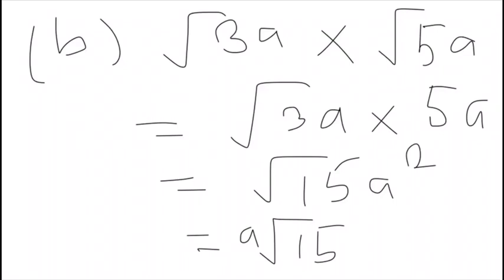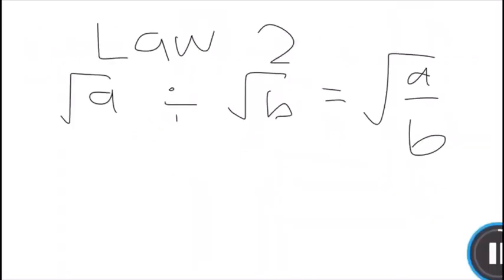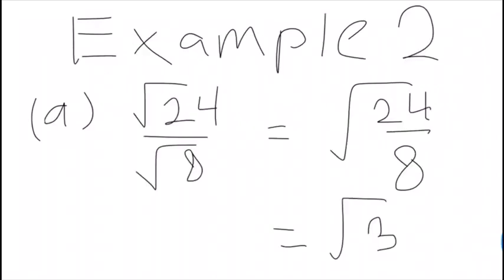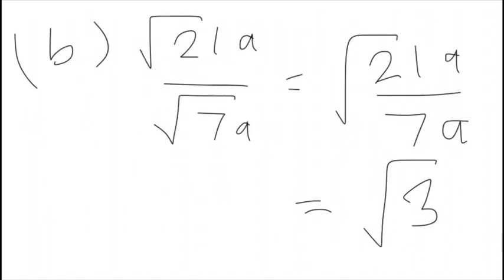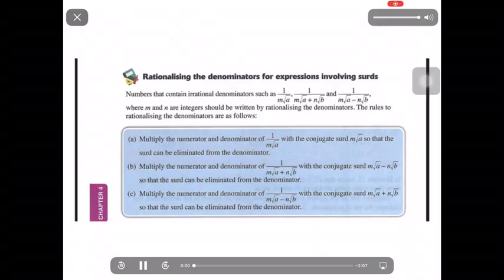For law number two, surd A divided by surd B, the answer is surd A per B. For example 2, question A, surd 24 divided by surd 8, answer is surd 3. Whereas for example 2 question B, surd 21A divided by surd 7A, so as usual, 21A divided by 7A, so answer is surd 3.